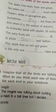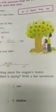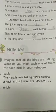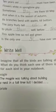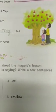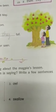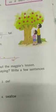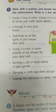Now imagine all the birds are talking about the magpie's lesson. What do you think one of them is saying? Write a few sentences for each bird in your book. For example, Eagle: 'The magpie was talking about building a nest in a tall tree, but I decided to make my nest on the cliff of the mountain.' Similarly write for the oriole, the owl, and the swallow. The swallow doesn't make a nest, and the owl prefers to lay eggs in another bird's nest.